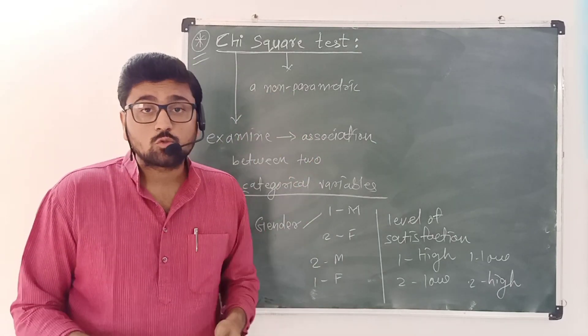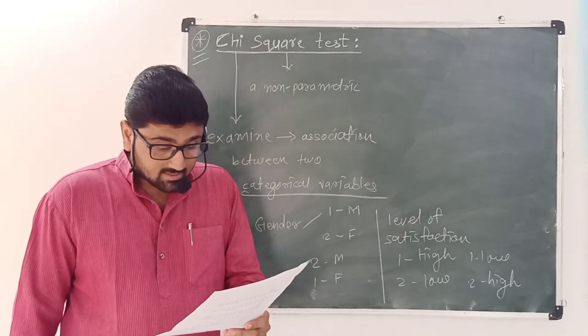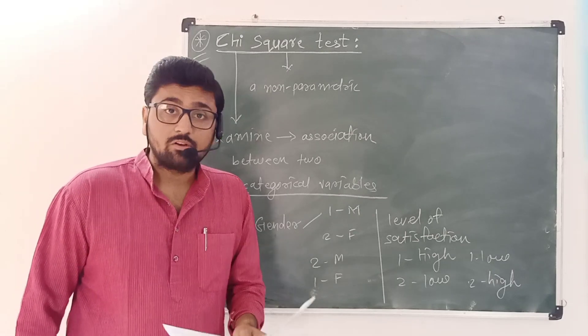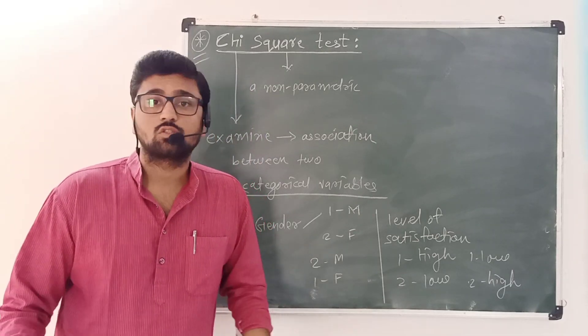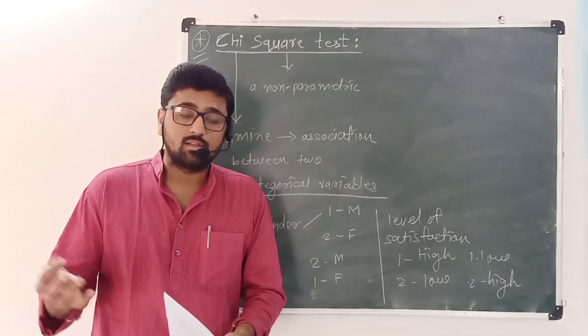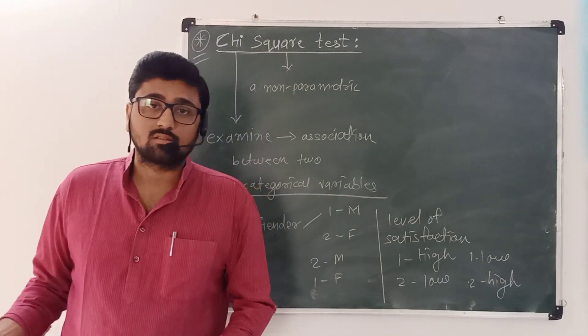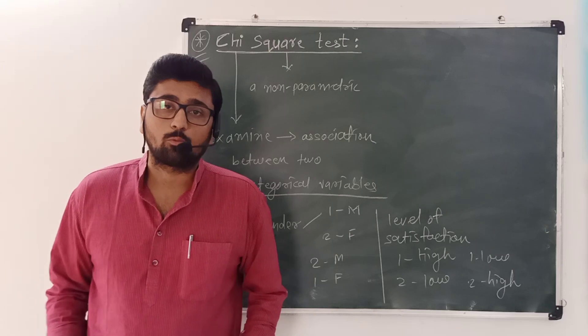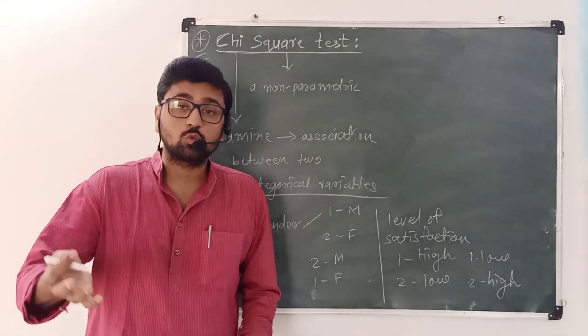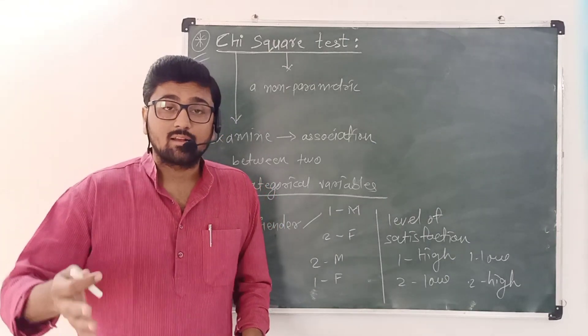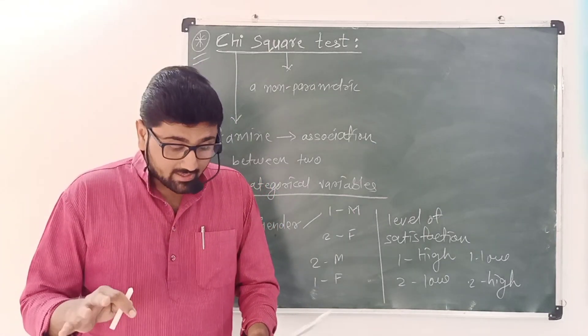We can also use the chi-squared test to examine the relationship between absenteeism and gender in a college, school, academic institution, or corporate sector, as those two are categorical variables.